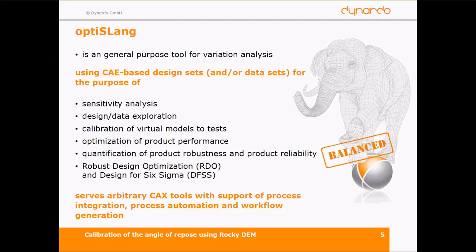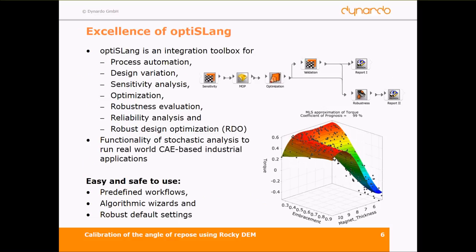We can use a lot of different CAE tools to support your application. In the normal workflow, OptiSLang is the first tool for process automatization, then design variation, sensitivity analysis, optimization, and robustness evaluation. OptiSLang should be easy to use with predefined workflows, algorithmic results, and robust default settings.